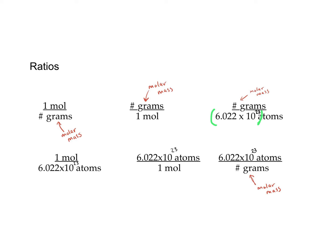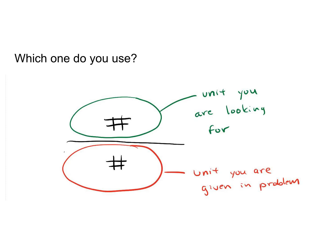We are going to come up with a way of starting from a word problem and figuring out which one of these six conversion factors to use to get the answer we want. The way to think about it: the top of the conversion factor is the unit you're looking for — what you want your answer to end up in. The bottom is the unit that was given in the problem, because you want to cancel that one out to get the right unit. So we select which one of the six by looking for what was given and what you're looking for — the unknown.